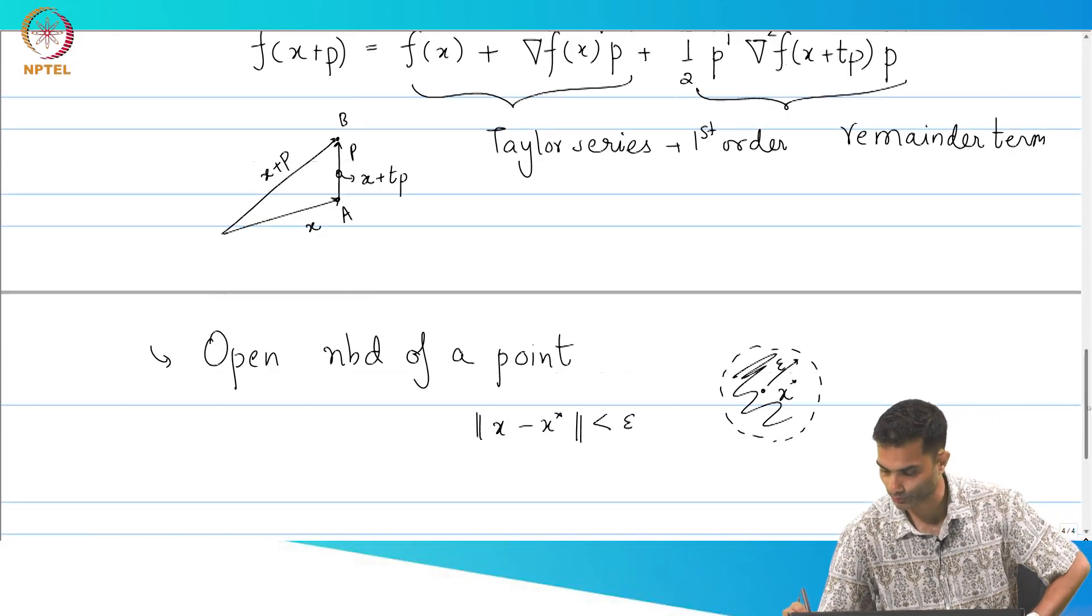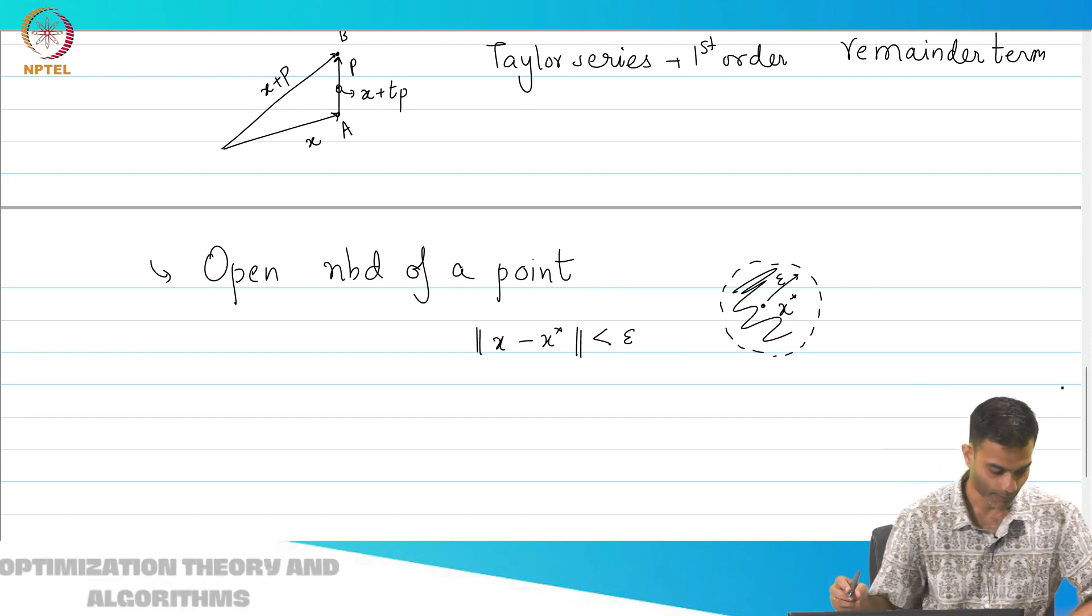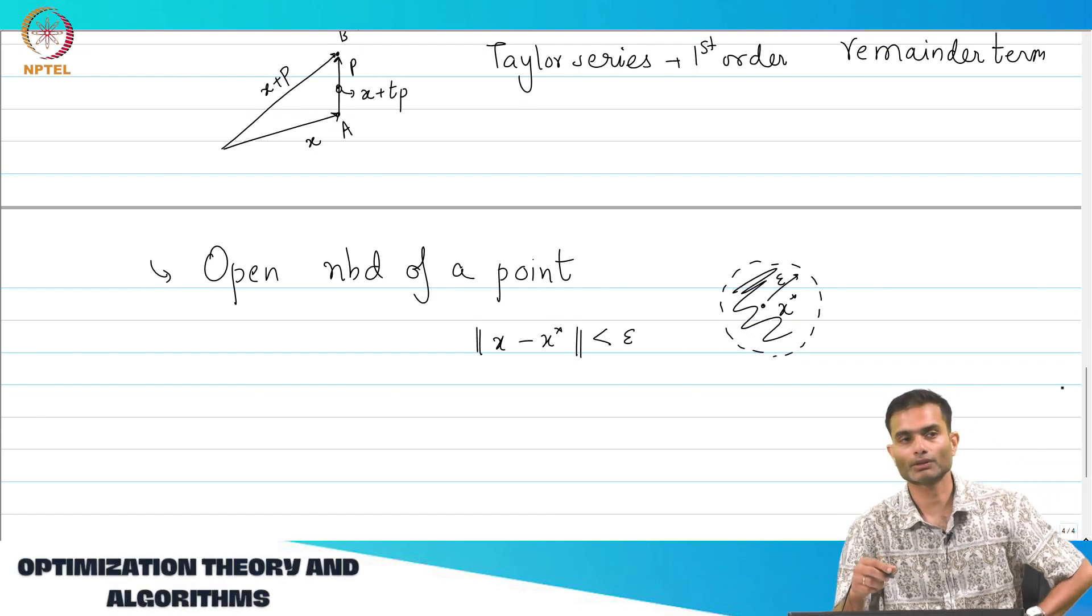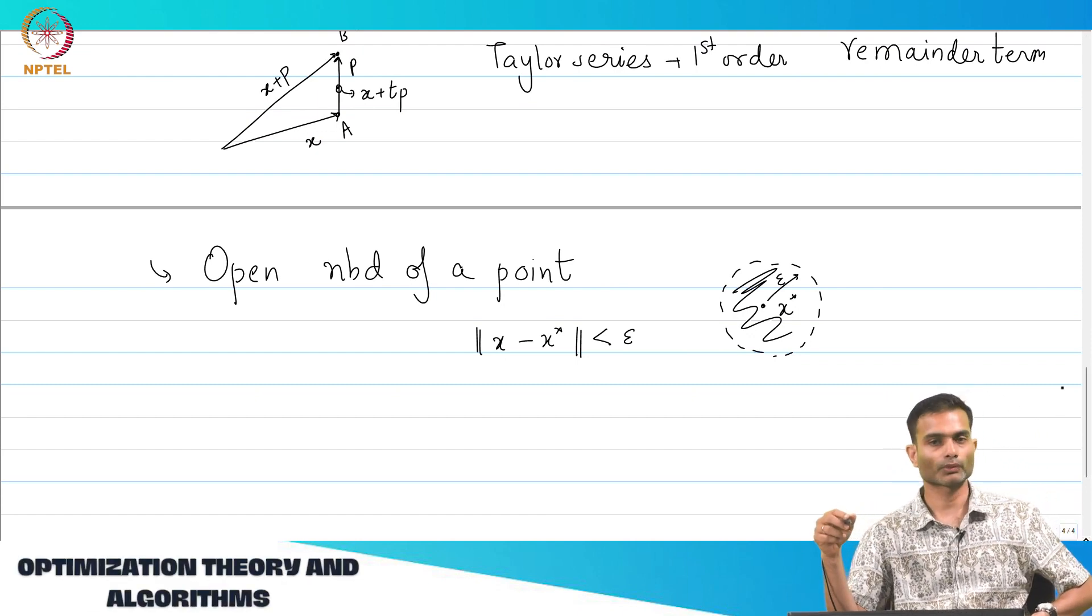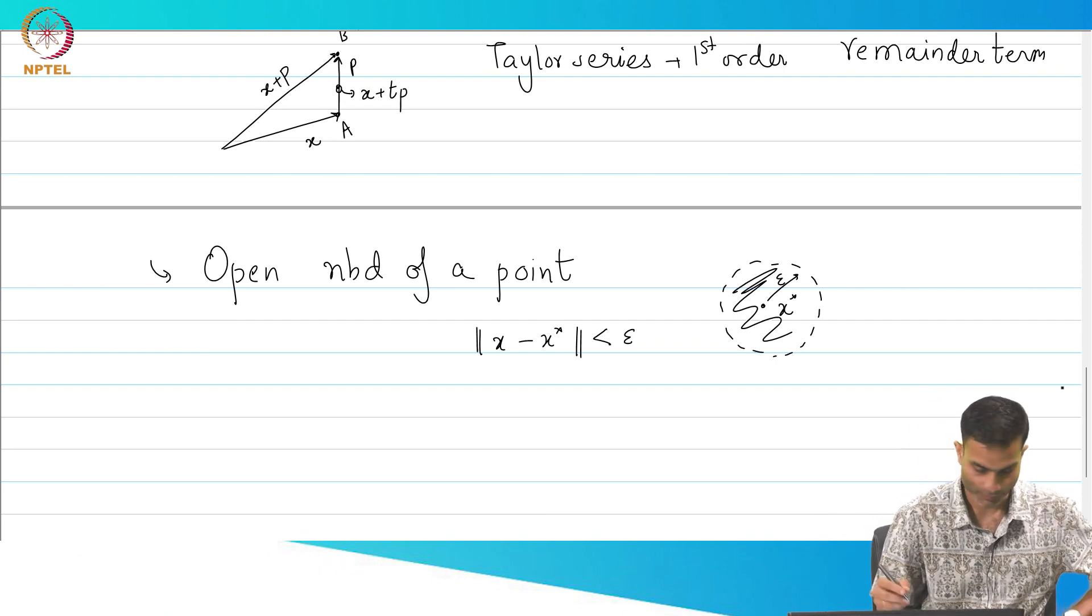Less than or equal to include the boundary that would be a closed neighborhood. So, we have all the nuts and bolts in place. Let us write down our first order condition.